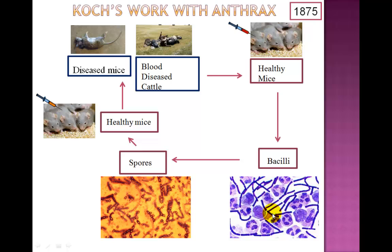After growing the bacteria in culture and allowing several hours for the bacteria to multiply, he noticed that the bacteria formed tangled threads and then formed spores. These spores were highly resistant to extreme conditions of temperature. He took these spores and injected them into healthy mice, and again the signs and symptoms of anthrax appeared in the mice. When he autopsied these animals he found the blood contained anthrax bacilli. Now the cycle was complete.